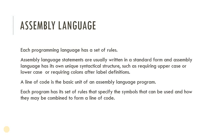Hello everyone. In this video we are going to learn about assembly language — some rules of assembly language and how we can write a program in it. We all know that every programming language has a set of rules. In C language, for example, to define an integer number you write the 'int' keyword, then the variable name, then a semicolon. That is the required format.